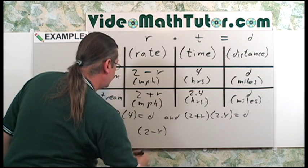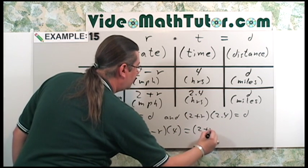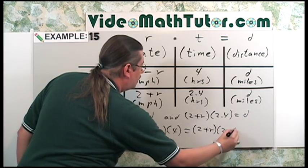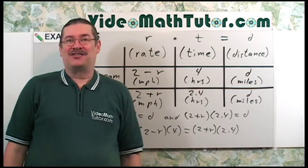2 minus r, and that quantity times 4, is equal to this quantity, 2 plus r times 2.4. So here is going to be the equation I want to solve.